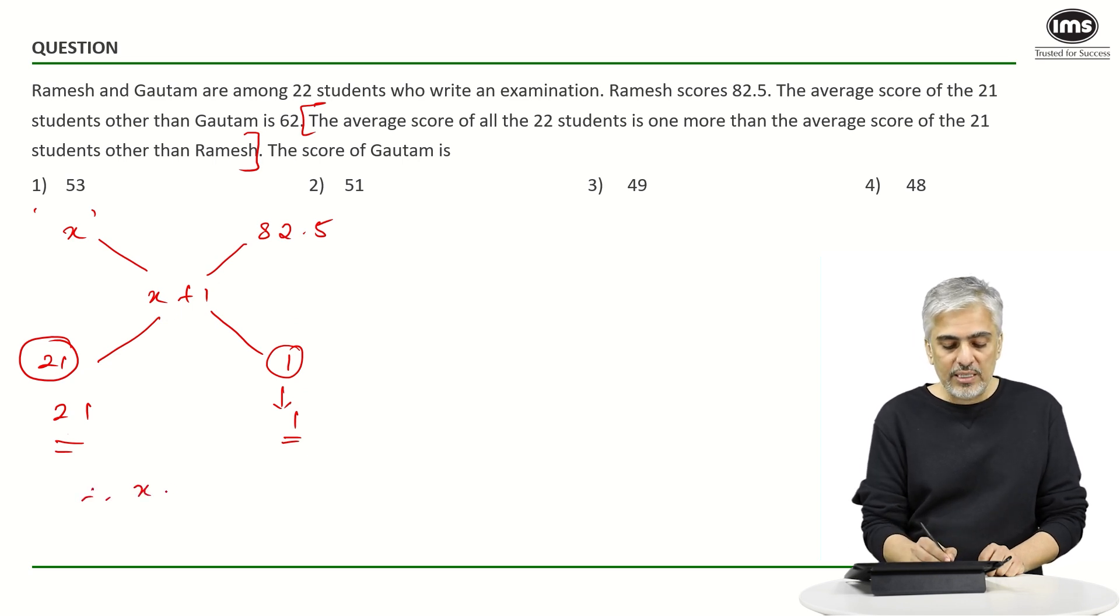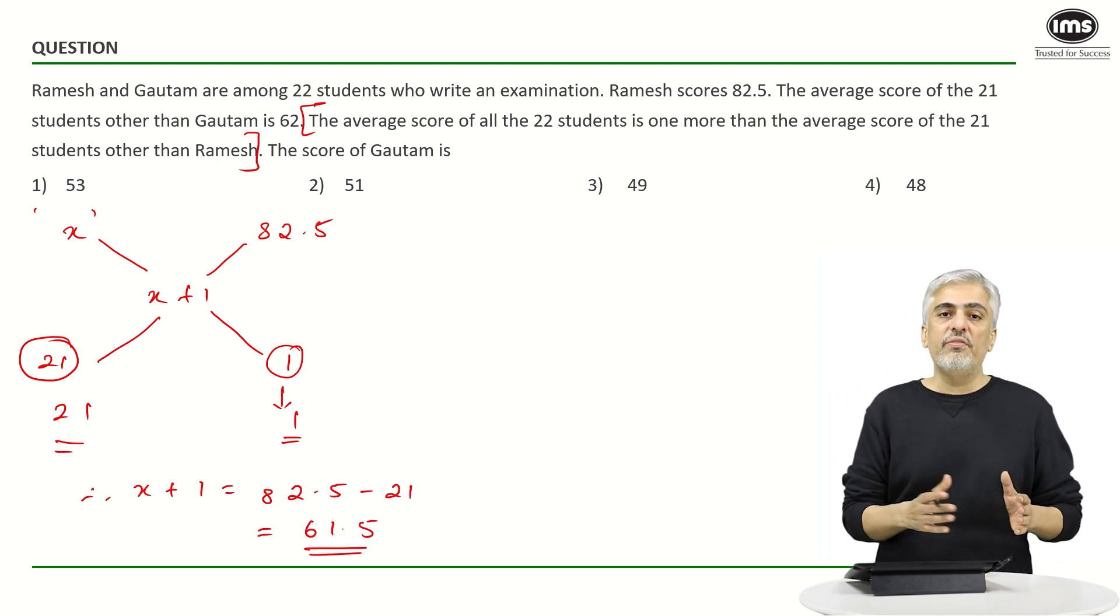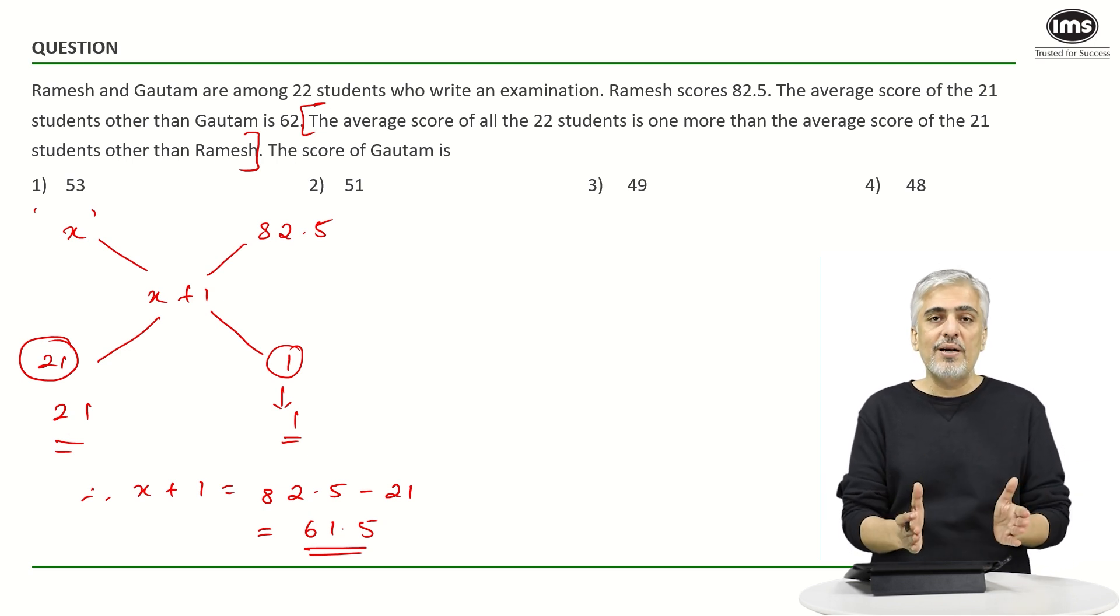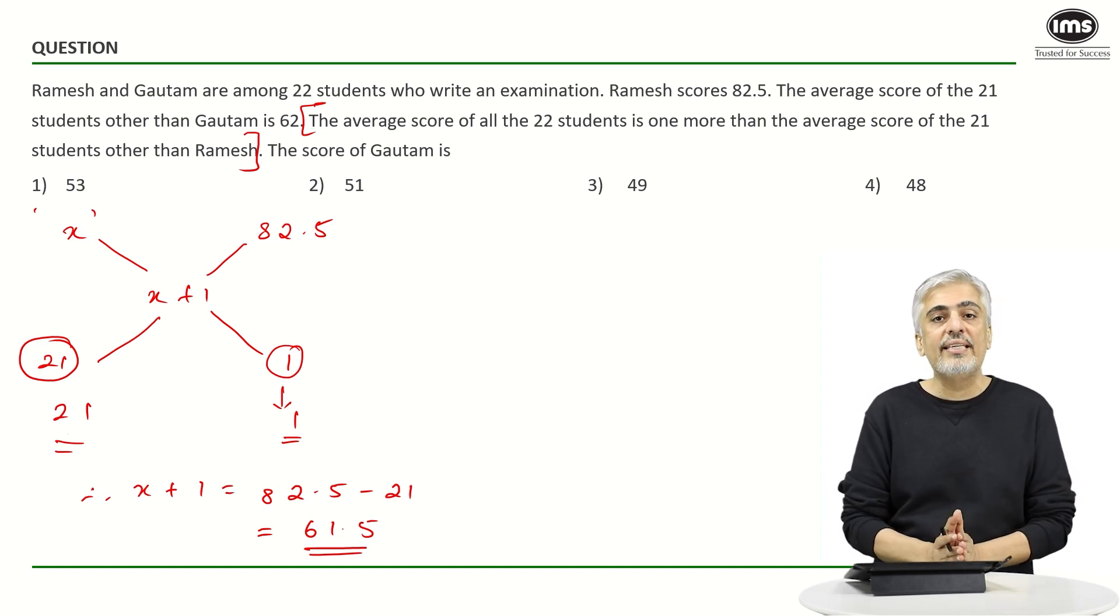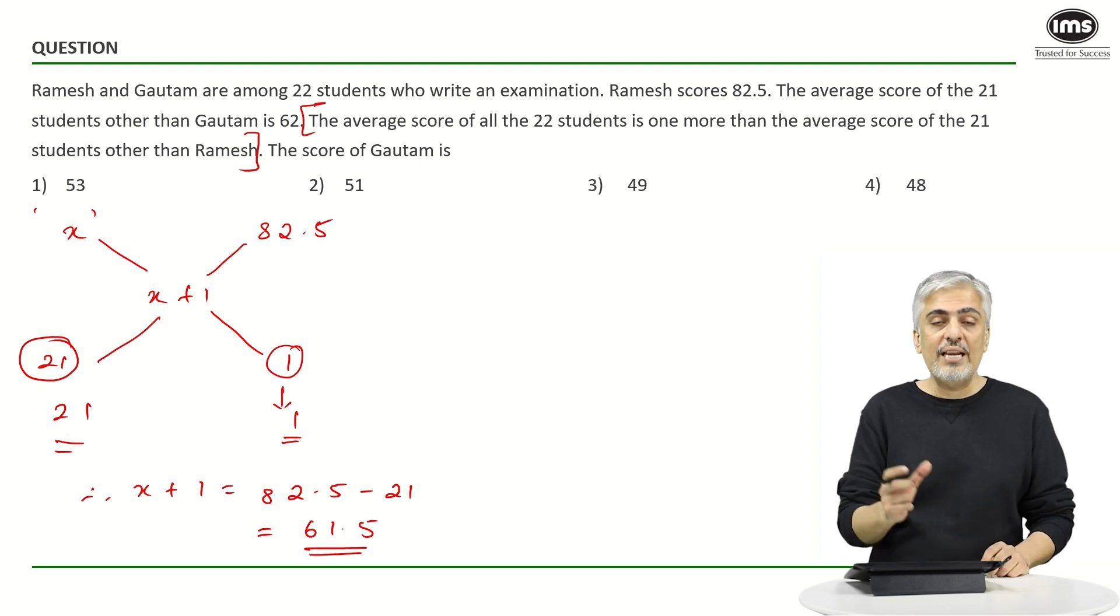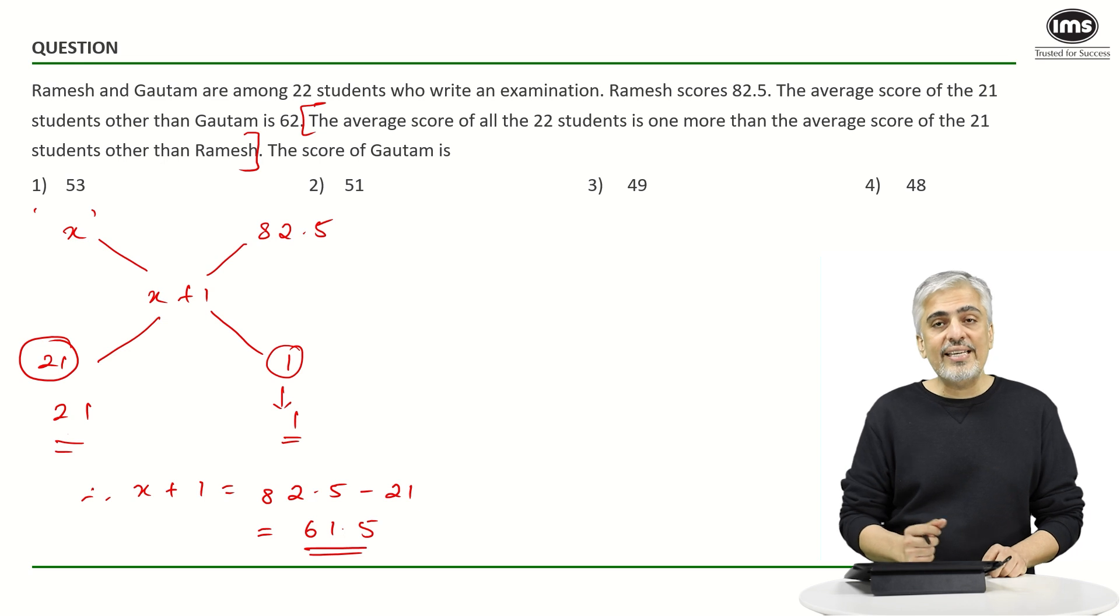Therefore x plus 1 is 82.5 minus 21, which is 61.5. Whichever way you prefer for the first part of the question doesn't matter. The first part, even the earlier method was okay, reaching 61.5 by both the methods was okay. But the important one was the second method or the second part of the question.